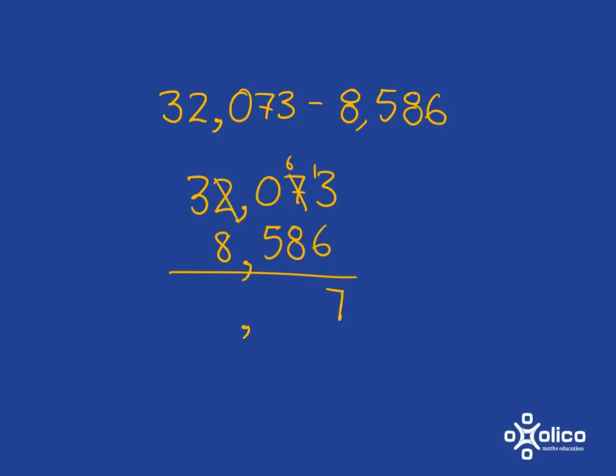So we take 1 from here and that becomes 10 tenths, and then we can take 1 of those tenths, leaving us with 9 tenths to bring it over here. We'll get 16 minus 8, which is 8.